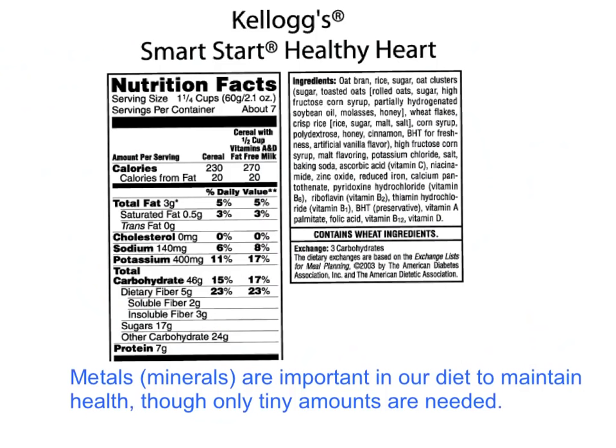We can see from this food label that sodium is mentioned as one of the ingredients along with potassium. And in this part of the chart, many metals are mentioned. We have calcium, iron, zinc and so on.